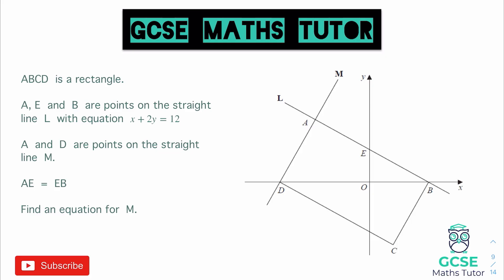Okay, here we go. For this question it says ABCD is a rectangle and we can see that rectangle just there, if I highlight it, there we go, so there's the rectangle that we're looking at. It says A, E and B are points on the straight line L, so now we're looking at L here and that is a straight line and that line has the equation x + 2y = 12.